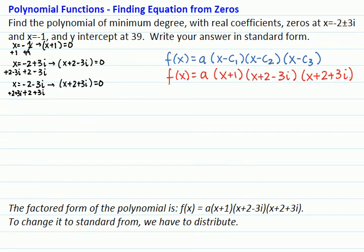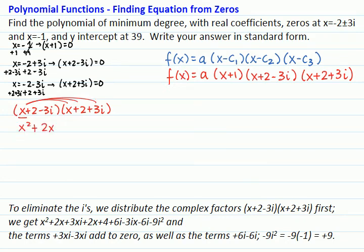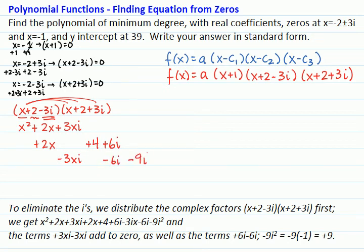And to change it to standard form, we have to distribute. To eliminate the i's, we will distribute the complex factors first: x plus 2 minus 3i and x plus 2 plus 3i. When I distribute the x, I get x squared plus 2x plus 3xi. When I distribute the 2, I get plus 2x plus 4 plus 6i. And when I distribute the negative 3i, I get negative 3xi, negative 6i, negative 9i squared.